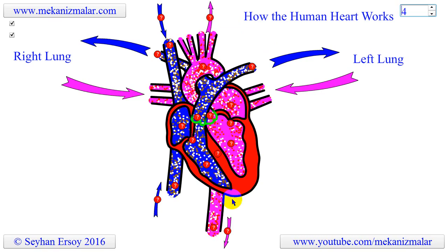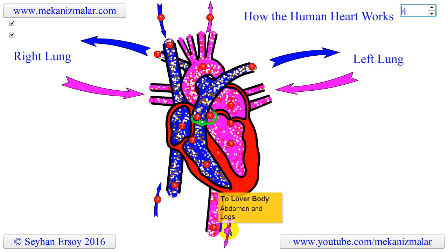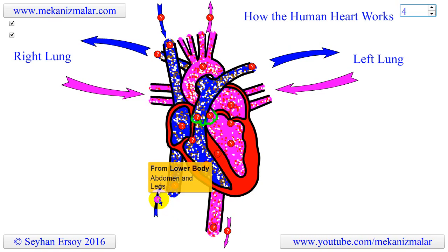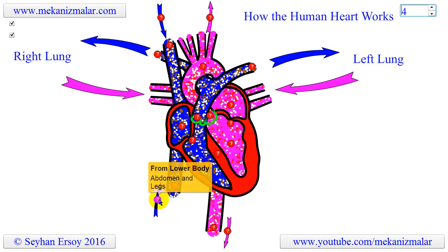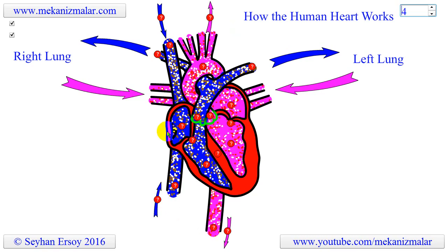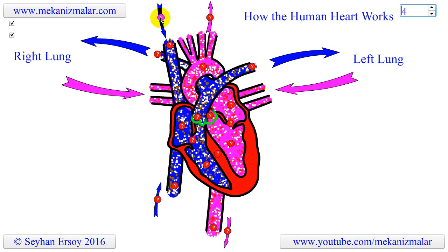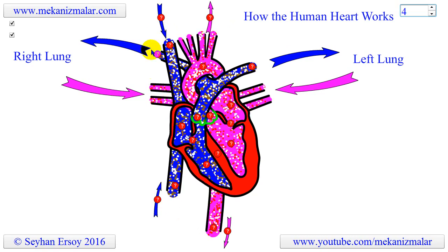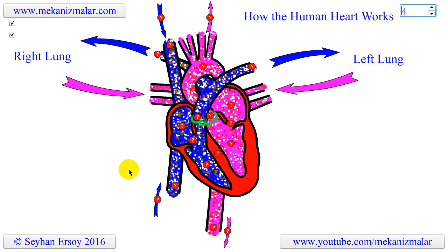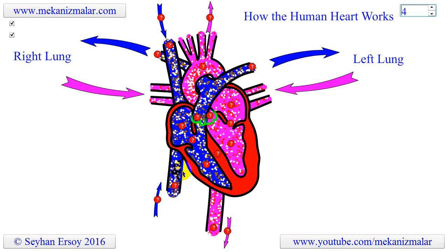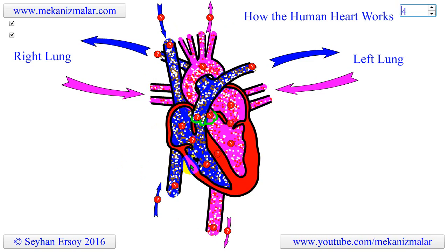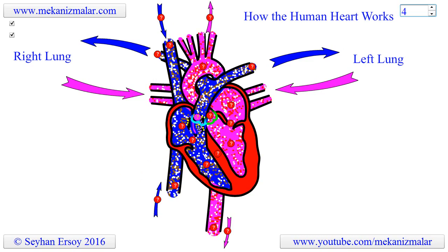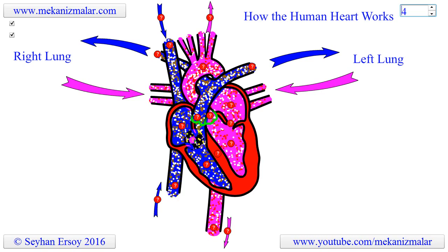Valves are like doors that open and close. They open to allow blood to flow through to the next chamber or to one of the arteries, then they shut to keep blood from flowing backward. If we use an engineering term, each valve acts like a check valve.